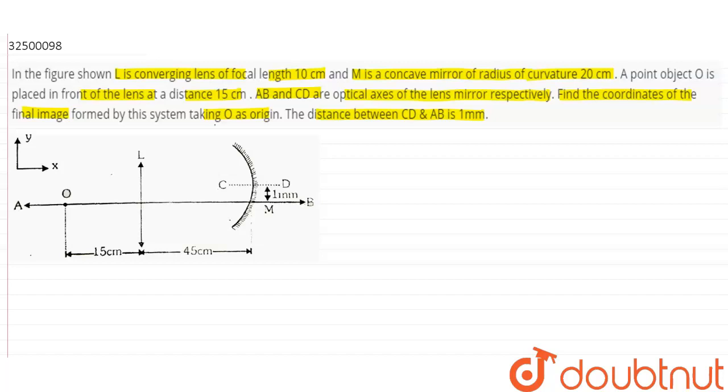Okay, so this is given. First we will set up the problem. The object is at 0,0 coordinate. The image from the lens will form, then reflect from the mirror. So first step, we will do refraction through the lens.